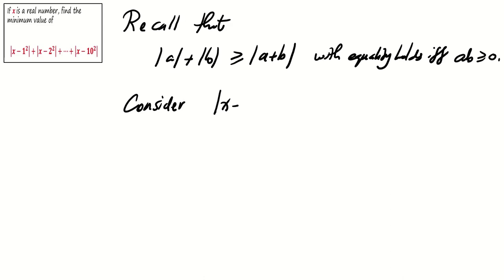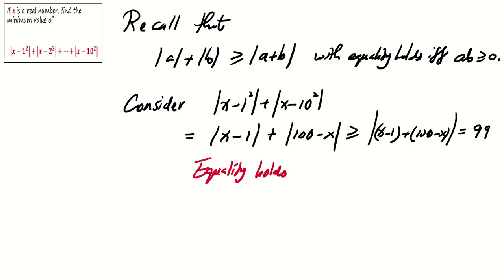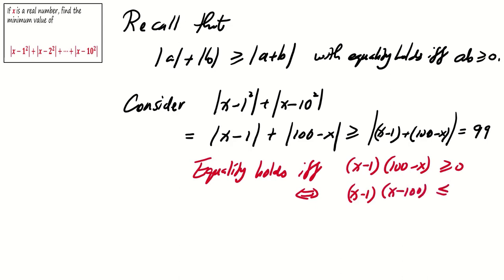Now we consider |x - 1| squared plus |x - 10| squared. We can write this as |x - 1| plus |100 - x| (rather than x minus 100). Using the result above, this is at least |x - 1 + 100 - x|, which equals 99. The equality holds if and only if (x - 1)(100 - x) ≥ 0, which is equivalent to x being in between 1 and 100.